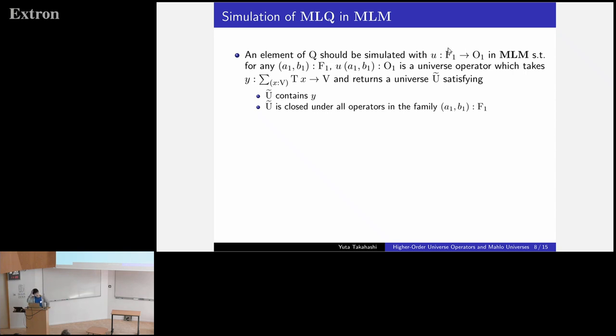Then an element of Q should be simulated with an operator U from F1, namely families of operators of order 1 to O1 in MLM, such that for any A1B1, which is a family of operators of order 1, U of A1B1 is a universe operator which takes a family of sets in V and returns a universe U tilde satisfying: U tilde contains Y, this family, and U tilde is also closed under all operators in the family, in this family.